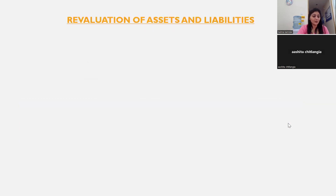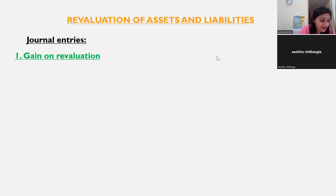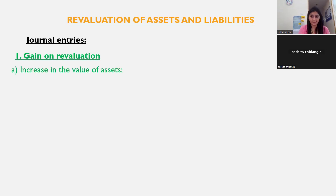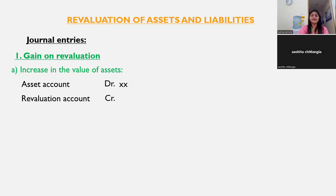For revaluation of assets and liabilities: you have a gain on revaluation when the value of assets increases or when a liability decreases. If there is an increase in the value of an asset, the journal entry is: asset account debited and revaluation account credited. If there is a decrease in liabilities, the entry is: liability account debited and revaluation account credited. All gains appear on the credit side of the revaluation account.